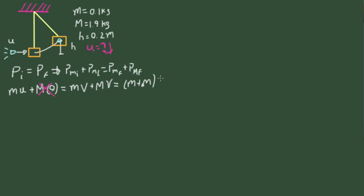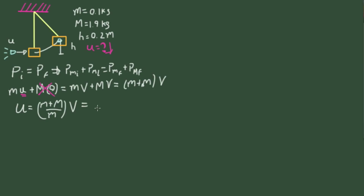The final momentum simplifies to (m + M) times v. Since your unknown is u, doing the algebra gives u = (m + M) / m × v. Plugging in numbers: m = 0.1 and M = 1.9, so (0.1 + 1.9) / 0.1 = 2 / 0.1 = 20. So the bullet travels 20 times faster than the recoil speed v of the block-bullet system.